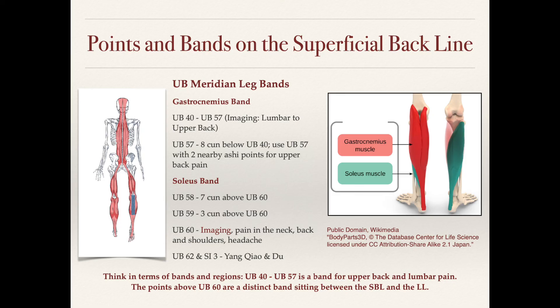UB40 is indicated for lumbar pain. And if you're not using UB57 for upper back pain — especially in the upper thoracic area between the shoulder blades — this is a great point for that. To treat upper back pain between the shoulder blades, locate UB57, then palpate a couple sun proximal and a couple sun distal to find two more sensitive points, and needle those three together as a dowel moth. It's a very effective point prescription for upper back pain.